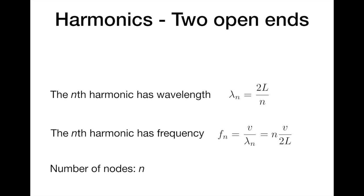If you work out the condition for standing waves to occur in the pipe, you'll find that the wavelength of the n-th harmonic has to be equal to twice the length of the pipe divided by n, where n is the number of harmonic: one, two, three, etc. If we convert our wavelength into a frequency using the velocity of a wave, you find that the frequency of the n-th harmonic is equal to v over lambda, so it's the speed over the wavelength, or the n-th harmonic times the speed over twice the length of the pipe. And the number of nodes on the pipe is just the number n.